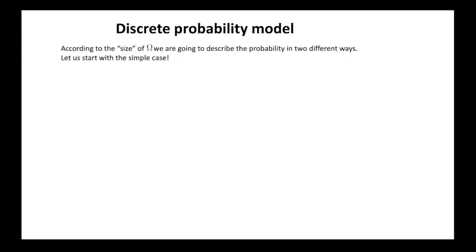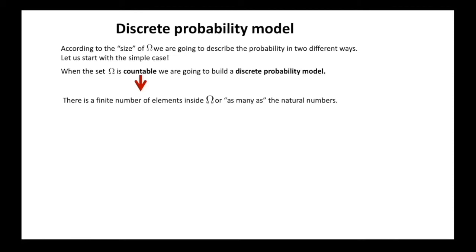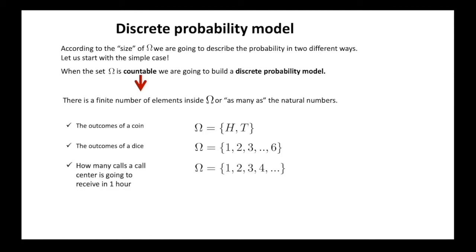Before defining a probability on our experiment, we need to pay attention to the size of omega. There are two different theories to do this, depending on the size of our sample space. Let's start with the simpler one — when the elements of omega are a finite number or at maximum as many as the natural numbers. In this case, we are going to construct a discrete probability model. The experiments of the coin and the dice belong to this category. If we consider how many calls a call center received in one hour, we could use the natural numbers to represent the outcome — we are still in the discrete case.